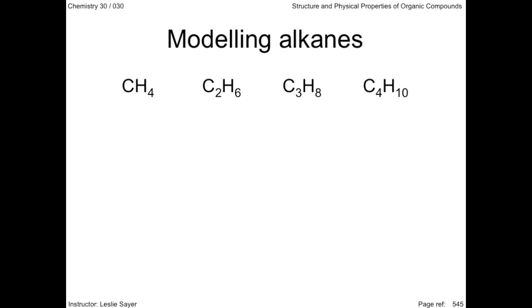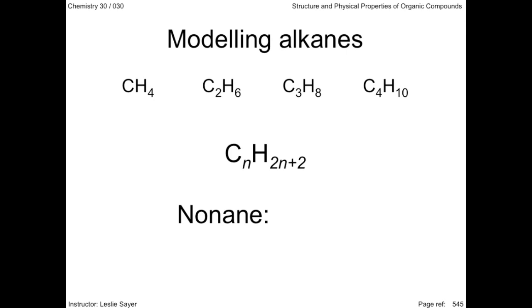A general molecular formula for alkanes is CₙH₂ₙ₊₂, where n is the number of carbon atoms. You can fairly quickly derive the molecular formula for any alkane. Nonane, which has nine carbons, would be C₉H₂₀.